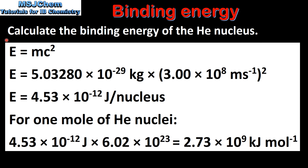Next we'll calculate the binding energy of the helium nucleus using the equation E equals MC squared. In a previous video we calculated the mass defect of a helium nucleus, which is 5.03280 times 10 to the negative 29 kilograms, and we multiply this by the speed of light squared. This gives us a binding energy of 4.53 times 10 to the negative 12 joules per nucleus. For 1 mole of helium nuclei we multiply the value for 1 nucleus by the Avogadro constant to give us 2.73 times 10 to the 9 kilojoules per mole.